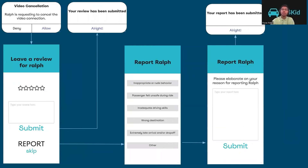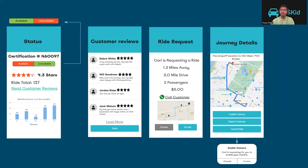When the ride ends, the parents will receive a notification asking to release control of the camera. They can then choose to leave a review or report the driver for any issues that they might have had. Moving on to the driver UI, when the driver initially signs in, they will be taken to the status page. On this page, they will have the ability to read the customer reviews, change their availability, and check revenue details.